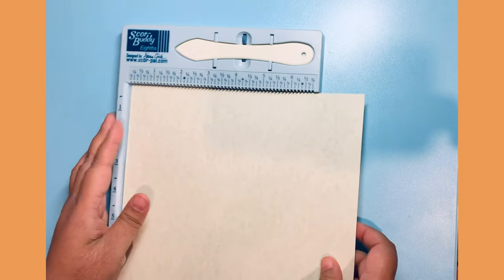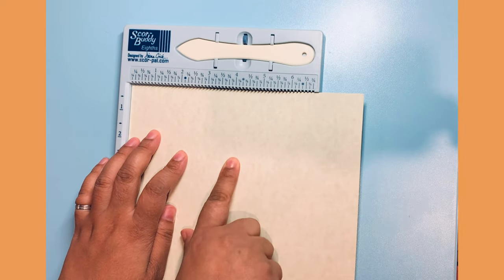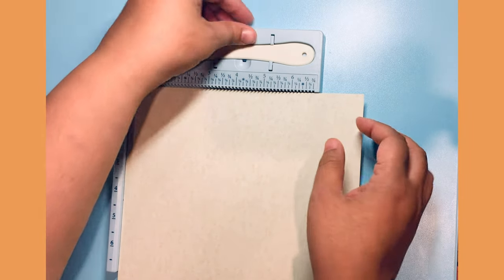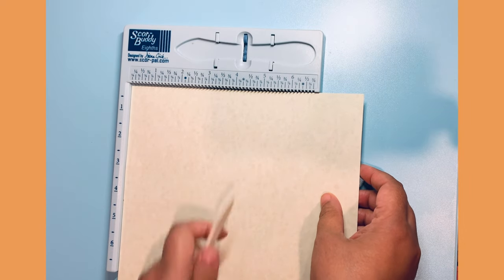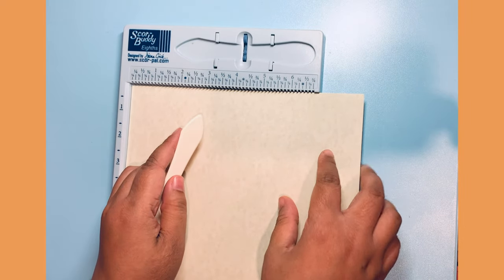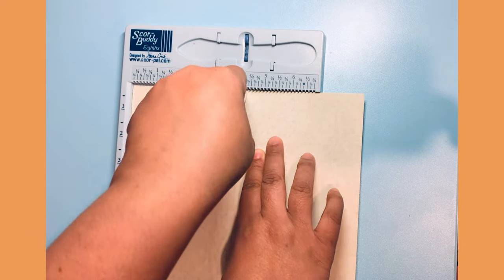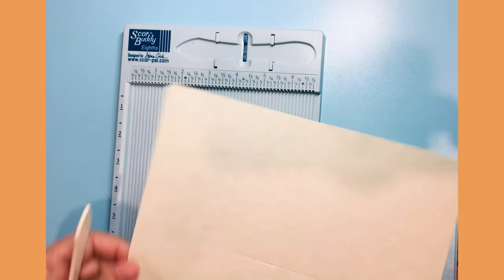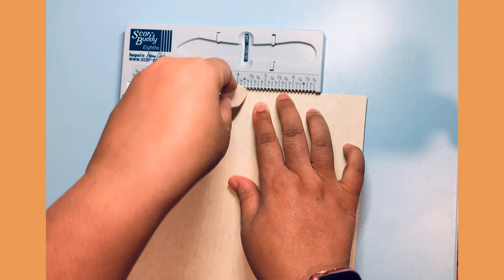So since I have an 8.5 inch square, the half of that would be 4.25. So I'm going to score my square midway, that is 4.25, which is here. I'm going to score it all the way, and turn it around, and then again score it at 4.25.